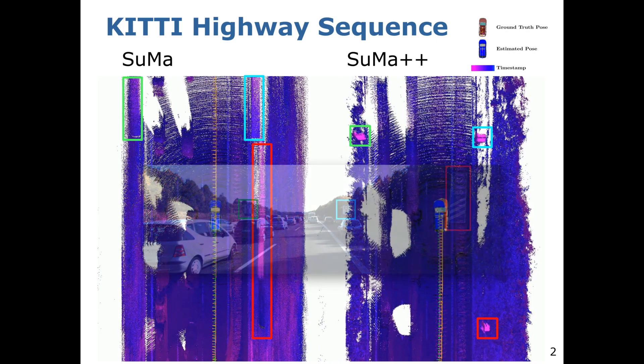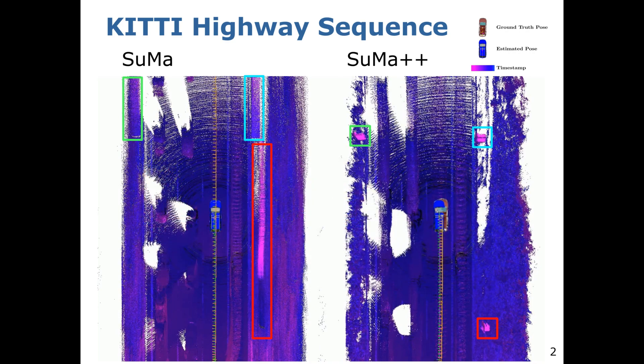On the right-hand side you can see that the street signs are accurately mapped, but on the left-hand side you can see that their position is incorrect.